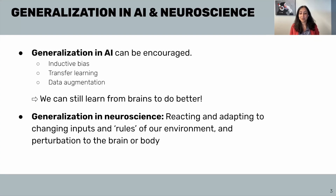In the previous tutorial, you heard about generalization for artificial intelligence and how techniques such as building in inductive biases, transfer learning, and data augmentation can really help us in this goal. Now modern machine learning methods have become excellent at representing input-output functions, but there's a long way to go when thinking about continued robust decision making and actions over a lifetime in the face of changing external and internal circumstances.